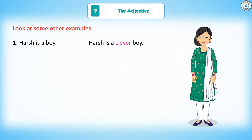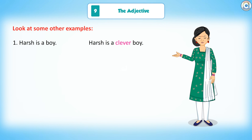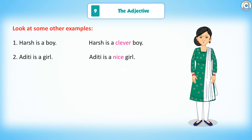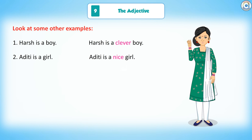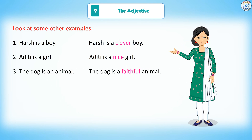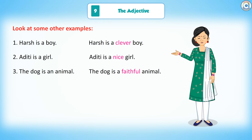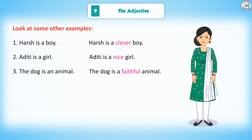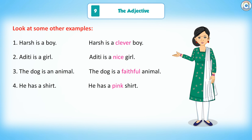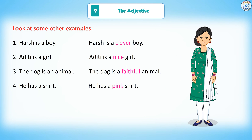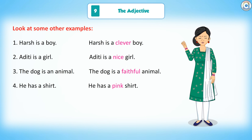1. Harsh is a boy. Harsh is a clever boy. 2. Aditi is a girl. Aditi is a nice girl. 3. The dog is an animal. The dog is a faithful animal. 4. He has a shirt. He has a pink shirt.